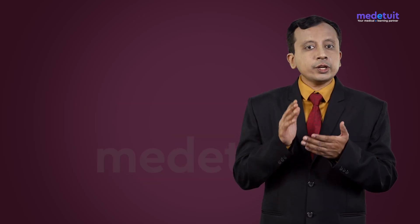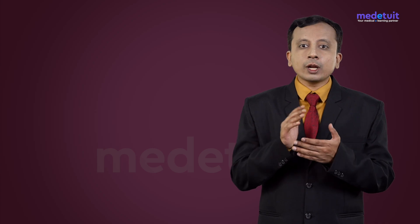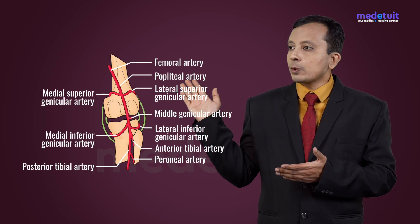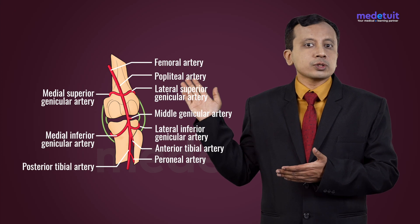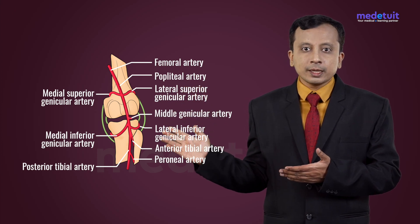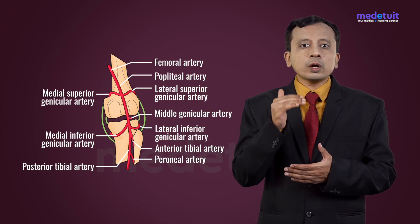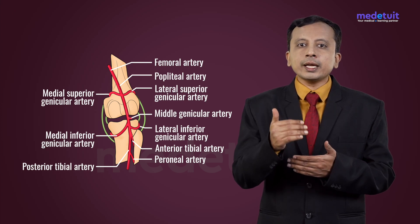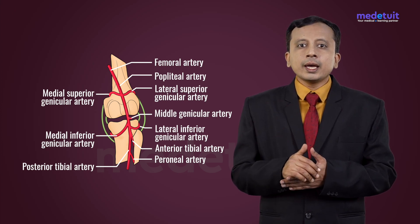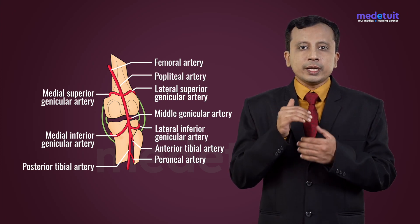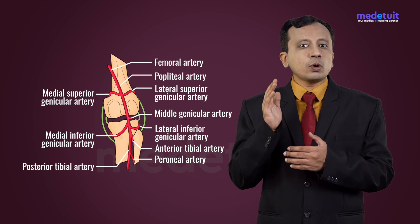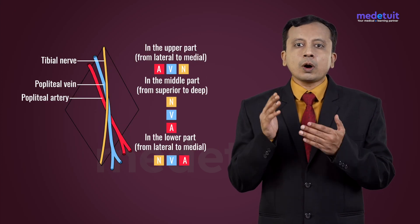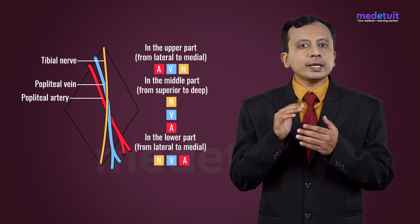The popliteal artery is a continuation of the femoral artery. It extends from the fifth osteoporotic opening of the adductor magnus, goes downwards, and terminates at the level of the lower border of the popliteus muscle into the anterior tibial artery and posterior tibial artery. As it goes downwards, it is related to the floor of the popliteal fossa, and is also related to the popliteal vein and tibial nerve.